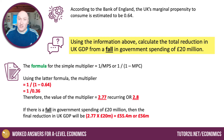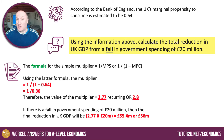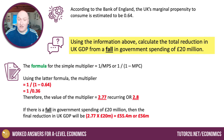Rearranging, because we know that MPS + MPC = 1, the formula becomes 1 divided by (1 minus the MPC). So we know the MPC is 0.64, meaning the propensity to save must be 0.36. Therefore, the multiplier is 1 divided by 0.36, which gives 2.7777 recurring — or 2.8. You could go 2.77 to two decimal places or just round up to 2.8.